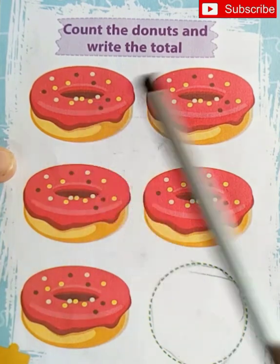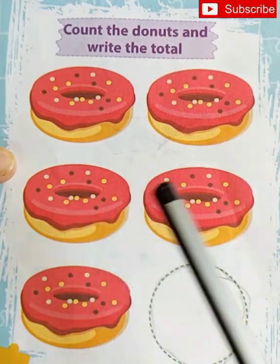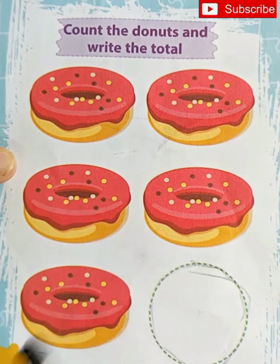1, 2, 3, 4, 5. How many donuts? 5, number 5! Write number here, number 5.